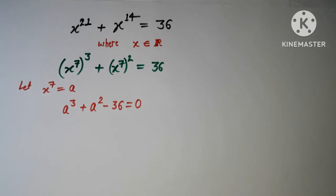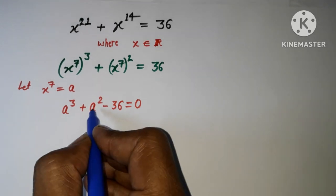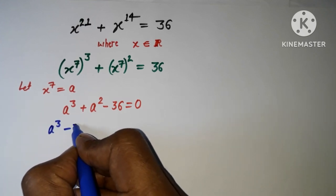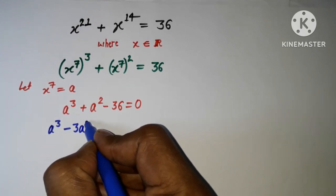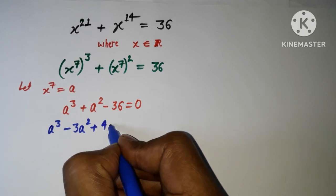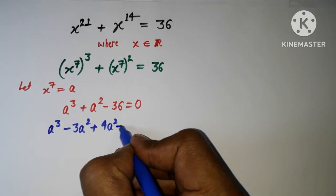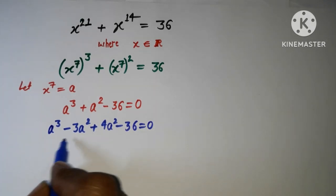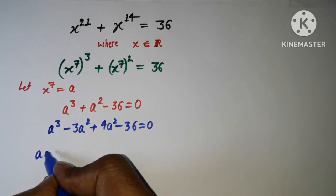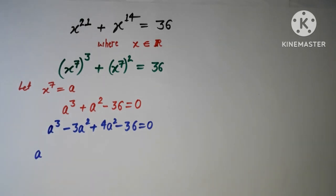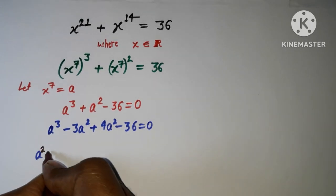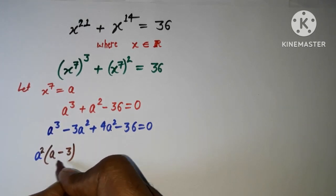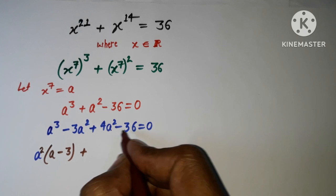I rewrite a³ + a² − 36 = 0 by splitting the a² term: negative 3a² plus 4a² minus 36 equals 0. Then I take a² as a common factor from the first two terms, giving a²(a − 3), and take 4 as a common factor from the remaining terms.